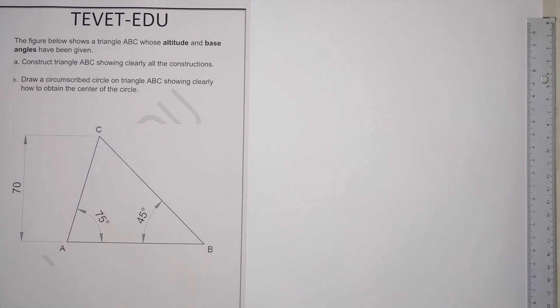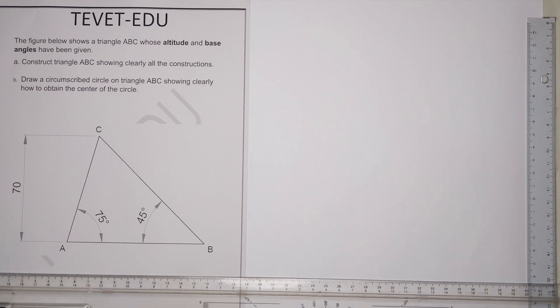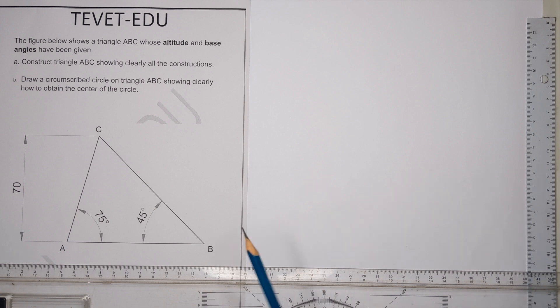According to what we've been given, if you consider what we have, we don't have the length of sides - we only have the altitude and the base angles. So what we start with here is a horizontal line. It doesn't represent anything, it's just a baseline which has no length.